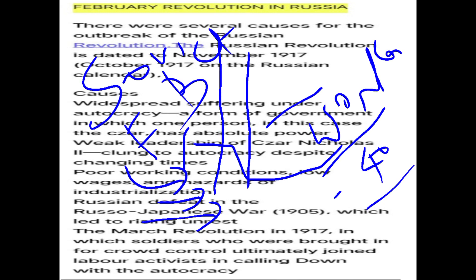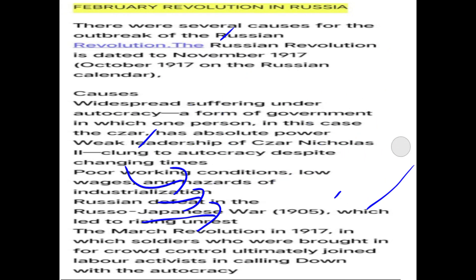Soviet means a congress, a group, or an association. This association of workers and soldiers, together with elected Duma members, formed the provisional government. The provisional government then went to the Czar and asked him to abdicate — give up — the throne. On March 2nd, the Czar abdicated. The provisional government was then formed, with Kerensky as its leader.